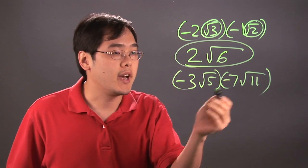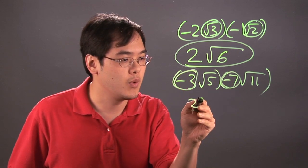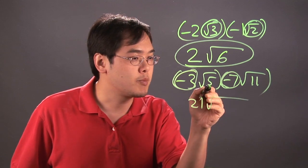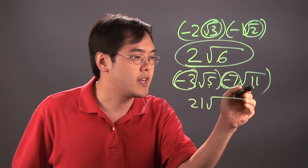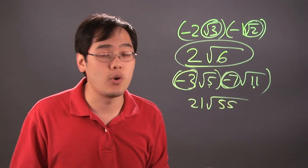What you do is you multiply the numbers on the outside first, negative 3 times negative 7 which is 21, and then multiply the numbers on the inside, 5 times 11 which is going to give you 55, and then see if it's possible to reduce the square root any more.